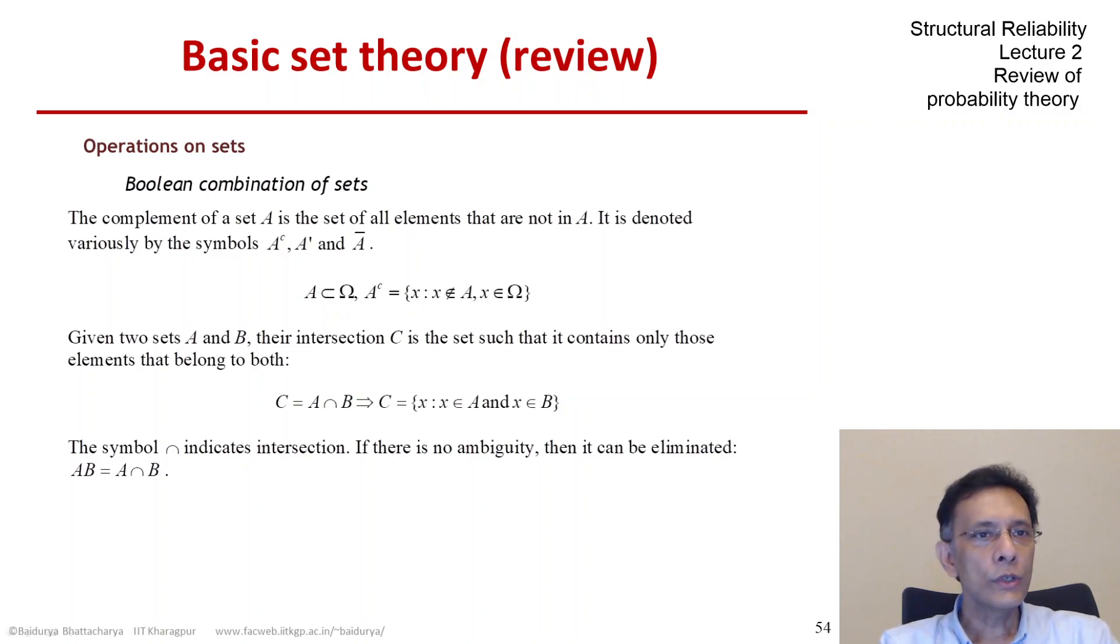For two events in the sample space, we need to define the intersection and assign probability to it. And we will often skip the intersection symbol and just denote the intersection by A, B.